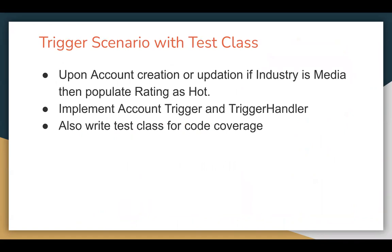Let's understand the scenario first. The requirement is: upon account creation or updation, if the industry is 'Media' then populate rating as 'Hot'. For example, if you are creating a new account record and populating industry as Media, the rating should be populated as Hot automatically through the trigger.